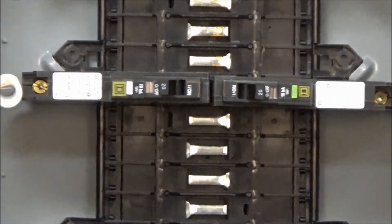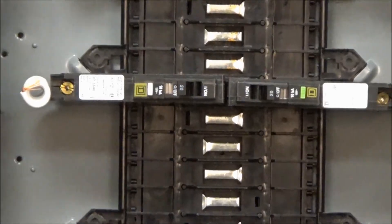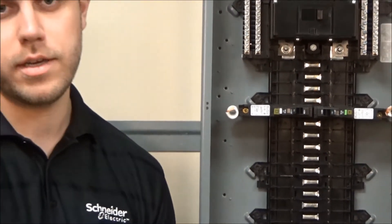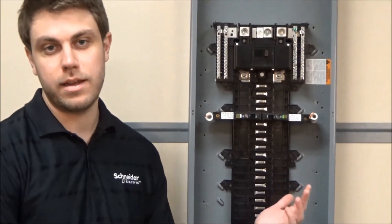These are used to detect parallel arcs. For example, if there is an arc between the hot and neutral of your circuit, this breaker is used to detect that and will trip.